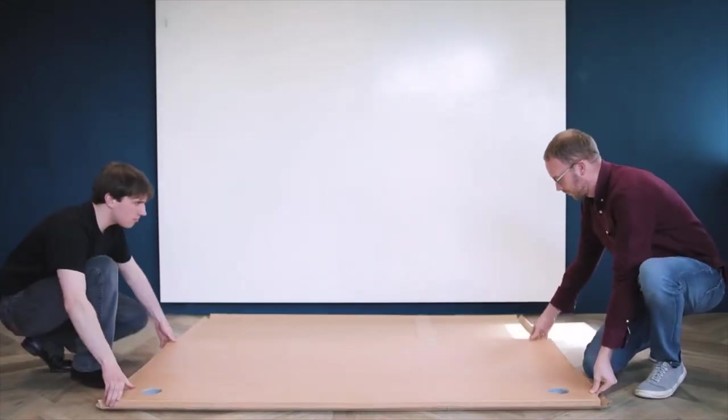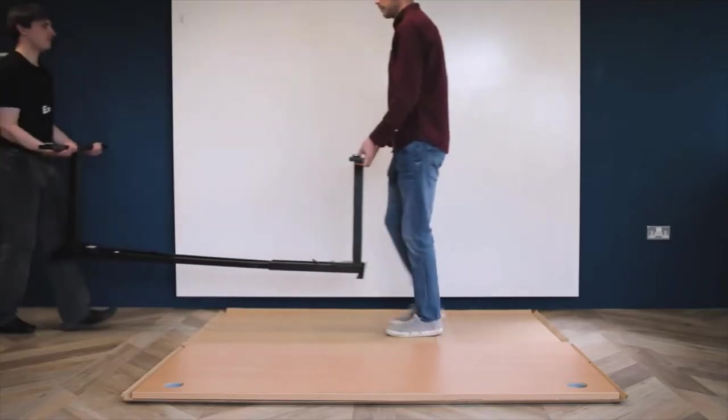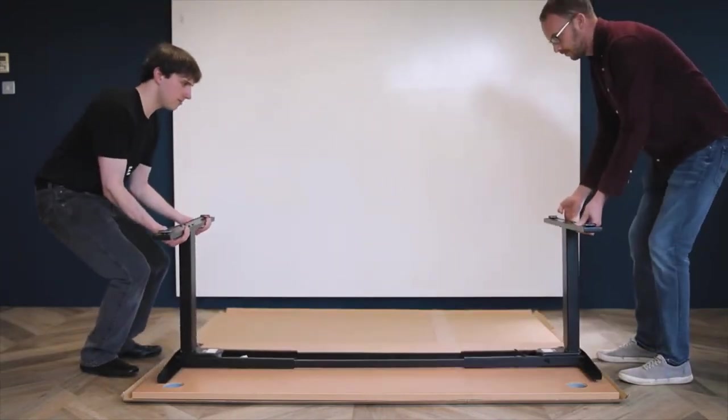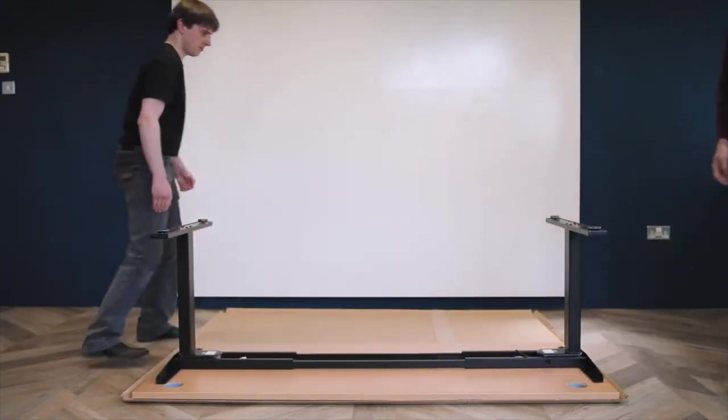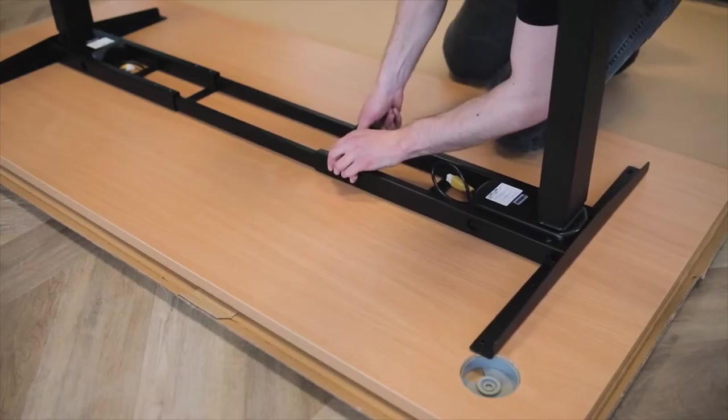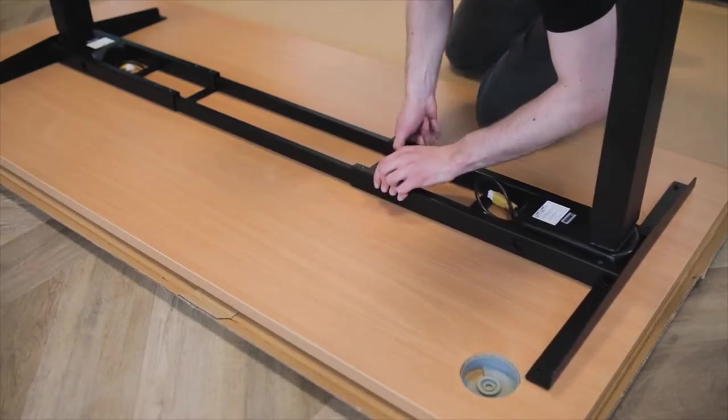Next, place the desktop on the ground with the underneath of the desk facing up. Then align the side brackets of the frame to the underside of the desk as required and fit with the screws provided.